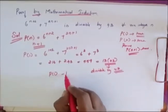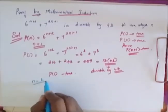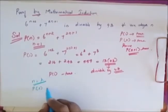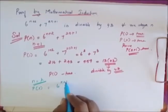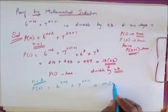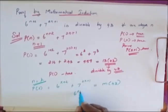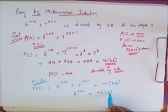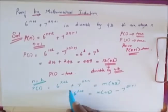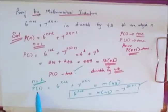So P of 1 is true. Since P of 1 is true, I assume P of K is also true. So when n equals K, P of K equals 6 power K plus 2 plus 7 power 2K plus 1. Since it is true, it is some multiple of 43, that is M into 43. From this, 6 power K plus 2 equals M into 43 minus 7 power 2K plus 1.